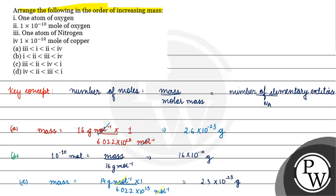Now, arranging in order of increasing mass: the largest is Option D (63.5×10⁻¹⁰ g), then Option B (16×10⁻¹⁰ g), then Option A (2.6×10⁻²³ g), then Option C (2.3×10⁻²³ g). So the order of increasing mass is C < A < B < D, and the correct answer is option A. I hope you understood it well. Thank you and all the best.